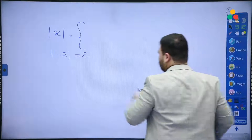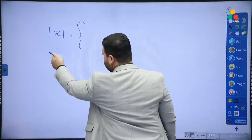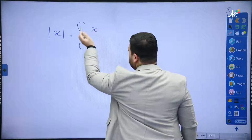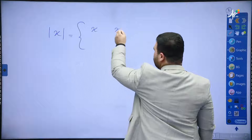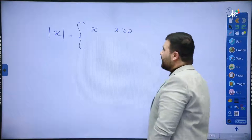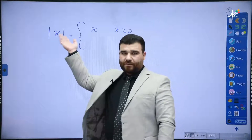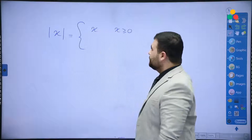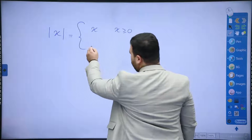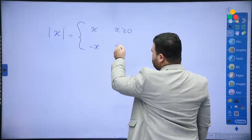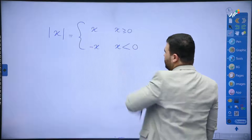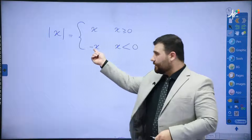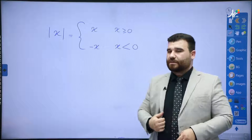Absolute value of x equals x if x ≥ 0, because for any positive value the value and its absolute value are the same. And it equals -x if x < 0, because for negative values we add an extra negative so that negative cancels negative, making the result positive.